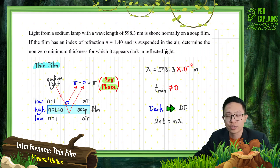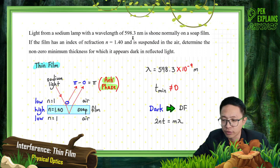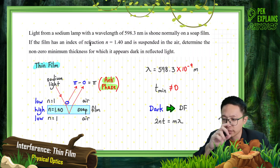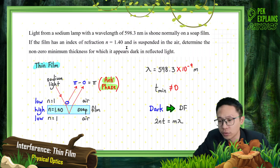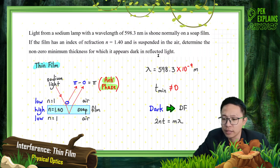Right now, questions on thin film interference. Light from a sodium lamp with a wavelength of 598.3 nanometers is shown normally on a soap film. If the film has an index of refraction n equal to 1.40 and is suspended in the air, determine the non-zero minimum thickness for which it appears dark in reflected light.